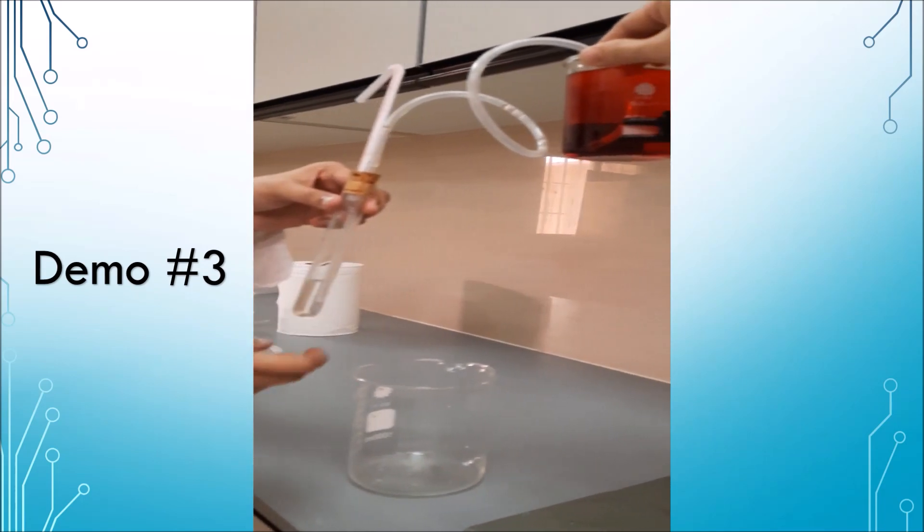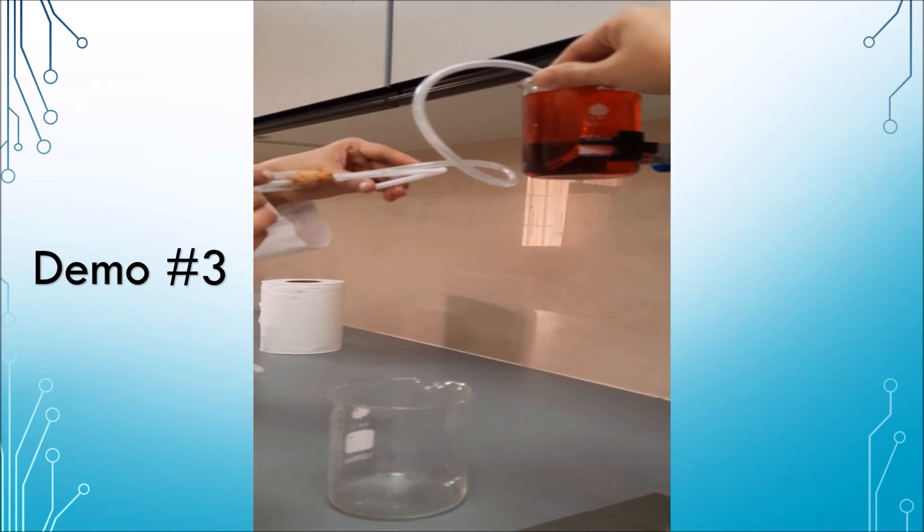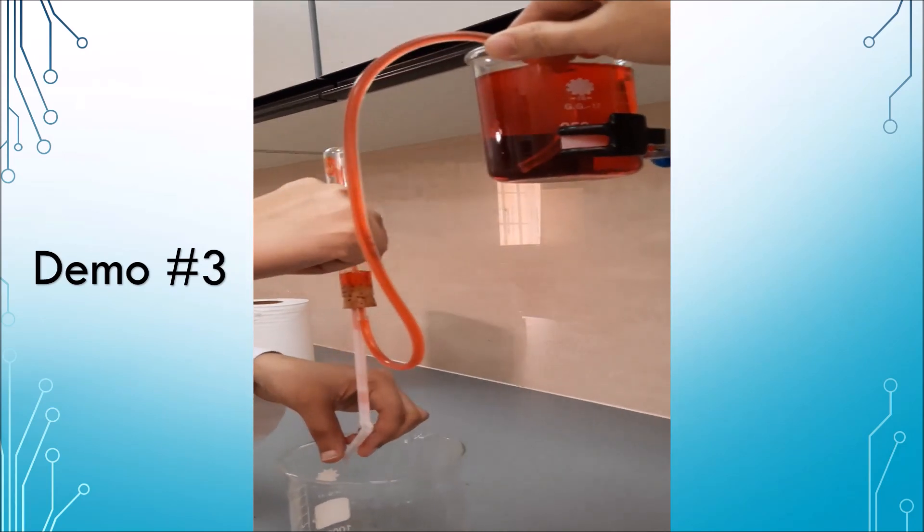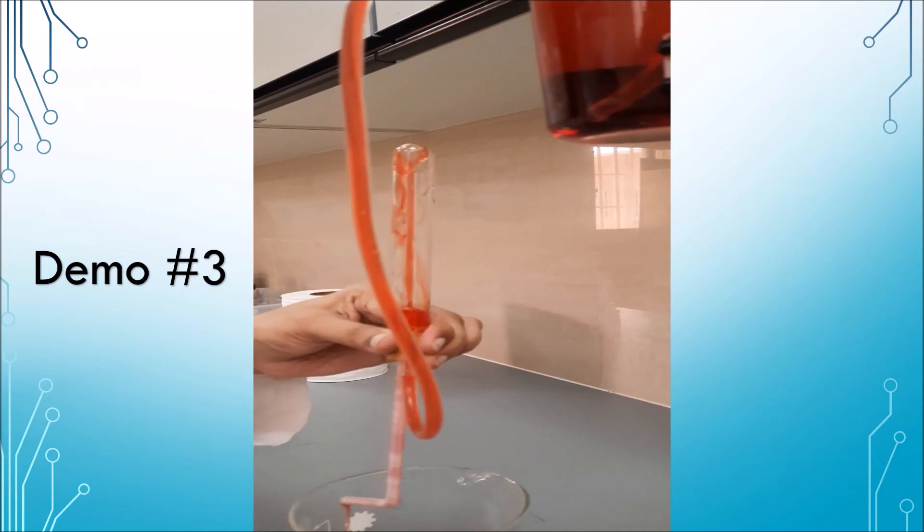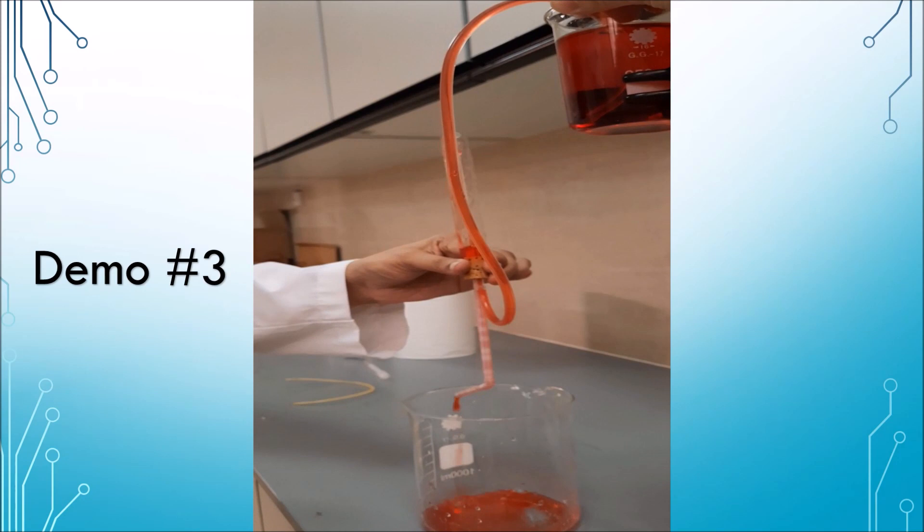For demo three, as the water pours out, it creates a vacuum inside the test tube. Since air cannot fill the space vacated by the water, the vacuum pulls the water from the beaker to the jet and refills the test tube.